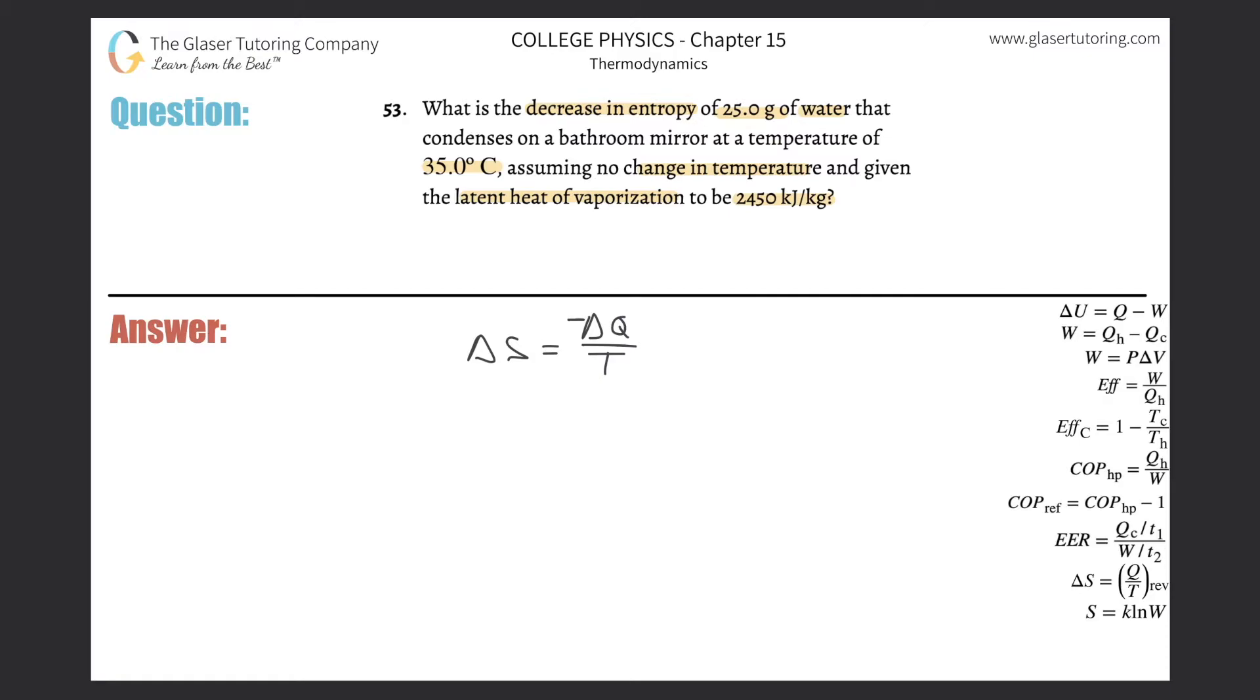We know heat's going to be lost. That should make sense because they're talking about condensing. This goes back to concepts in chapter 13 or 14. Now I have to think about how Q is connected to this heat of vaporization, the condensation, and the mass of water.